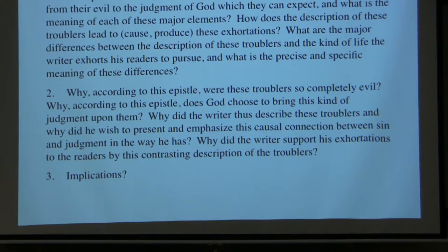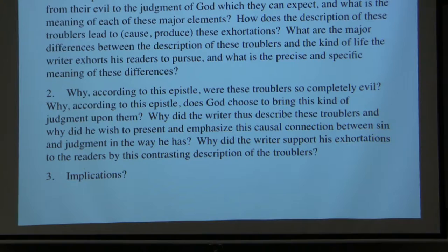Why, according to this epistle, did God choose to bring this kind of judgment upon them, given the causation between their ungodliness and God's judgment? Why did the writer — and here you get into rational questions about the writer's purpose — describe these troublers in this way, and why did he wish to present and emphasize this causal connection between sin and judgment as he has?